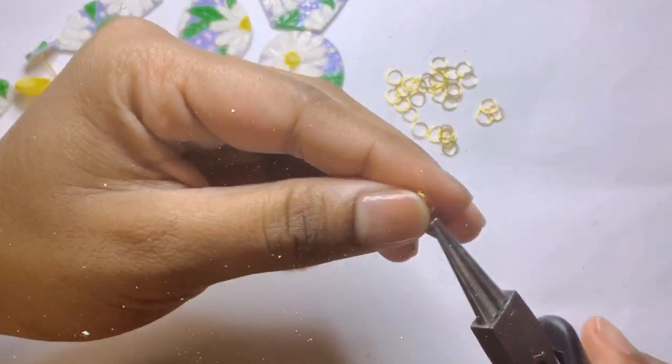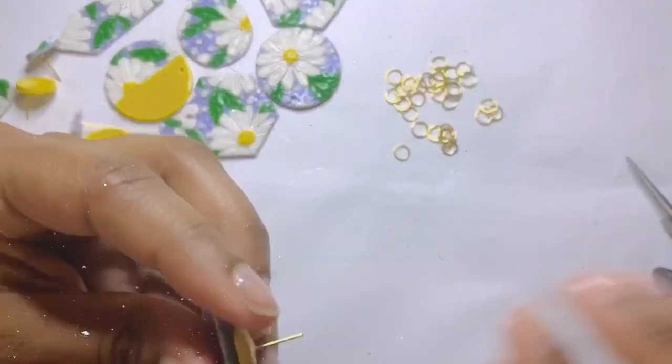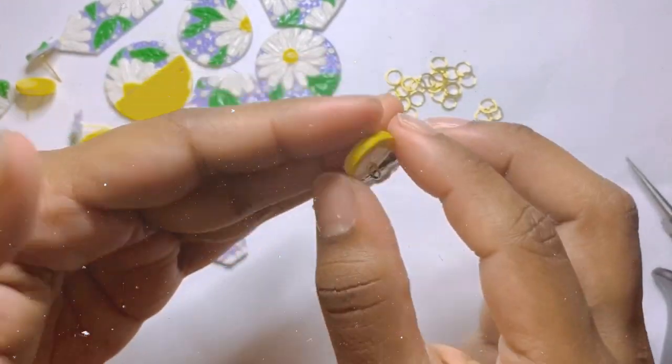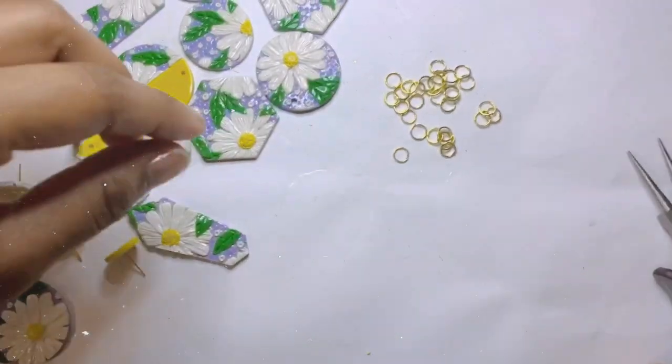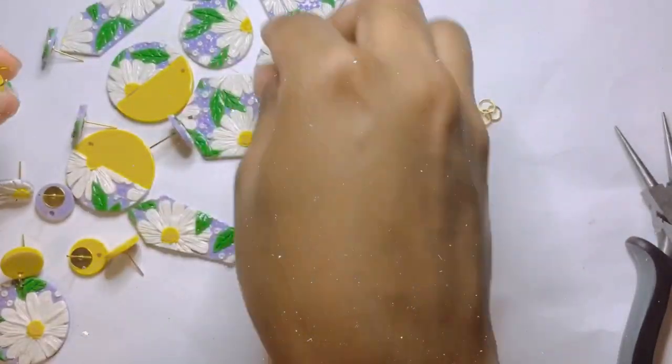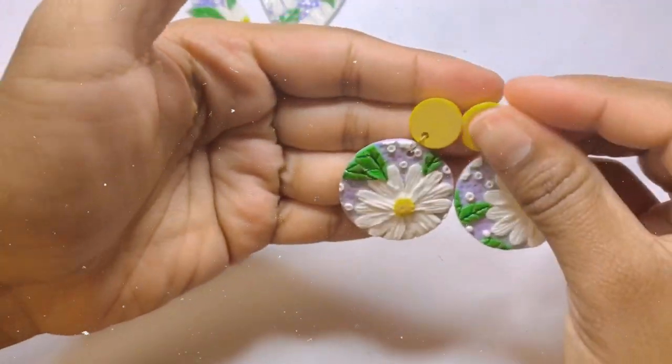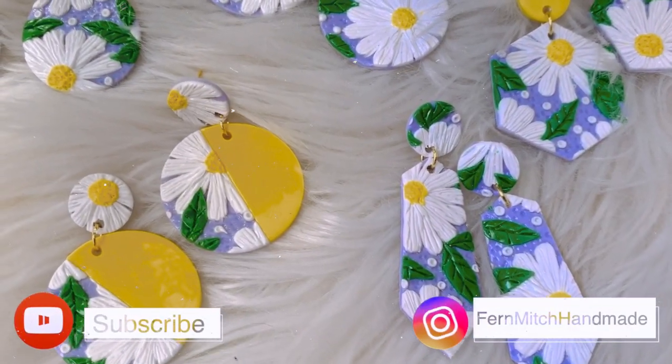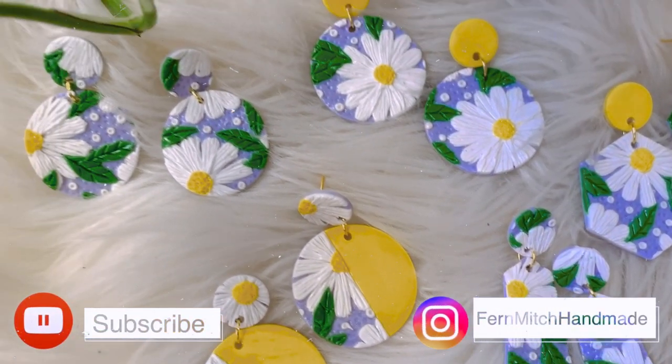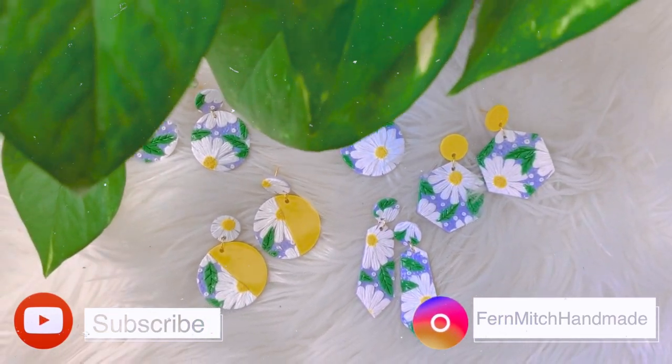To finish my earrings off, I added all the jump rings. And that is the end of this tutorial. I hope you guys enjoyed it. Please make sure you follow me on Instagram at fernmitchhandmade. And I'll see you in the next tutorial.